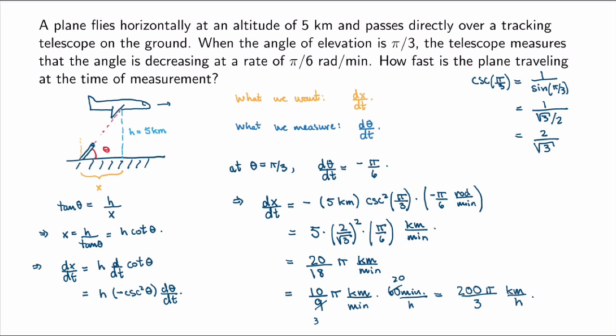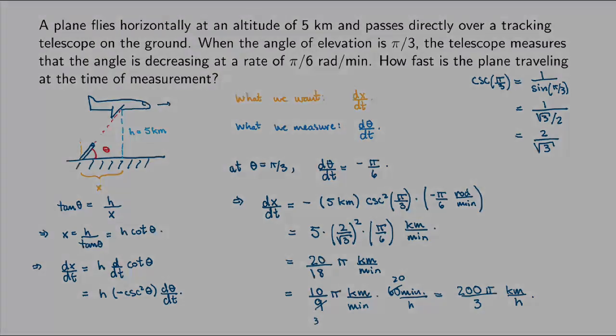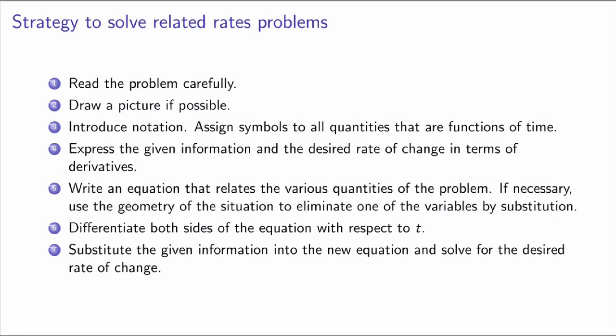Fantastic! This is a really nice problem and a good example of a related rates problem. It's realistic too — if you really have a telescope tracking a plane, to get the velocity of the plane this is exactly what you would do: look at the rate of change of the telescope angle with the ground and deduce from that the rate of change of the position of the plane, i.e., its velocity.